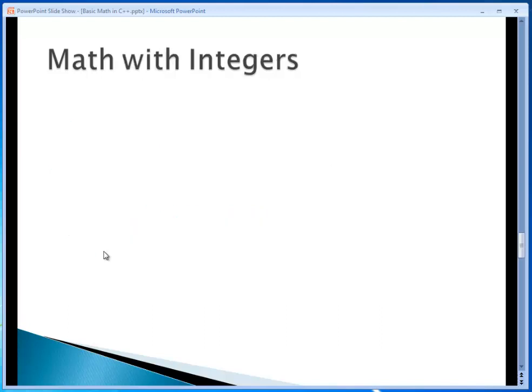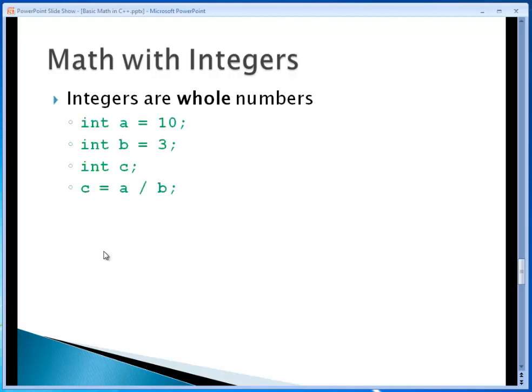And I want to cover one last thing real quickly. When we do math with integers, whole numbers, we have to be aware of how we treat the answer, especially when that answer is not a whole number. For example, here we've declared three variables. Integer a, b, and c. They're all integers. a and b have been given an initial value of 10 and 3. C has just been declared as an integer but has no initial value.